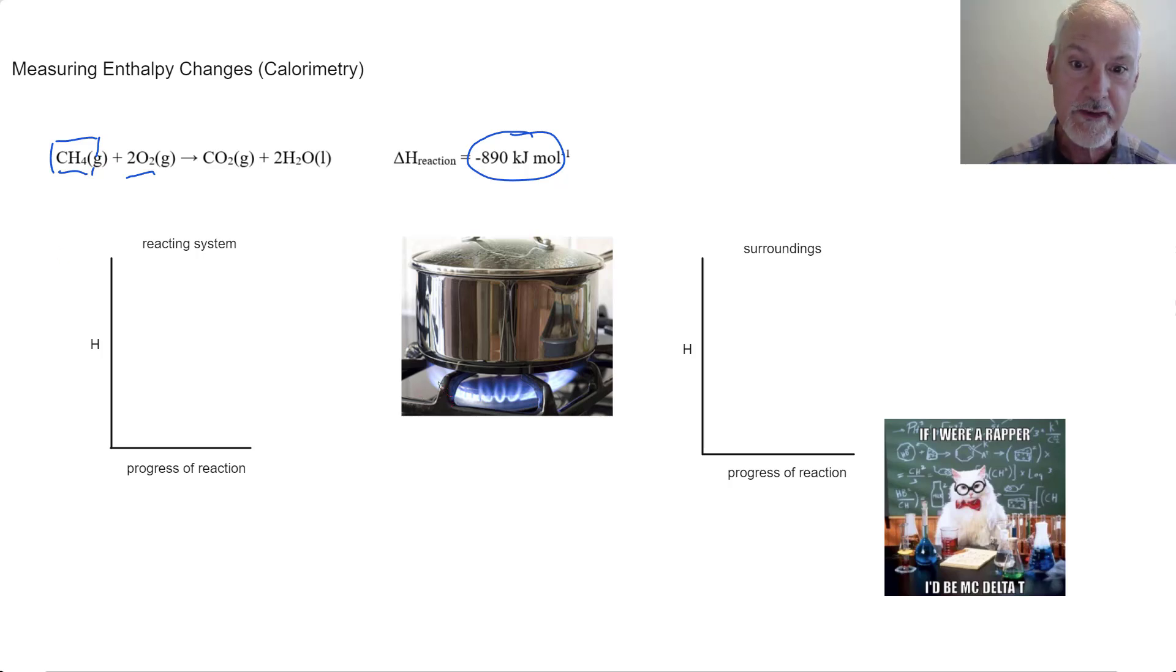Here I have a pot sitting on a natural gas stove. My reacting system would be this fuel down here, where the blue flame is, so that constitutes the reacting system. The surroundings, the pot, the water in the pot, and the air, they would constitute my surroundings.